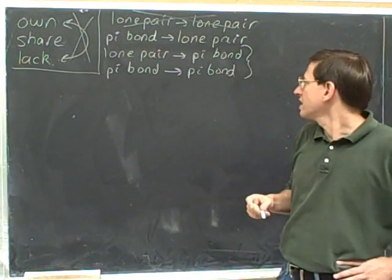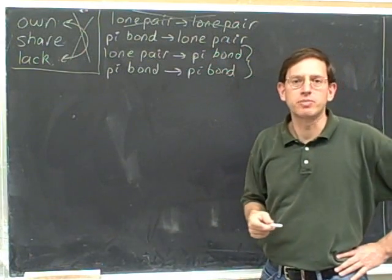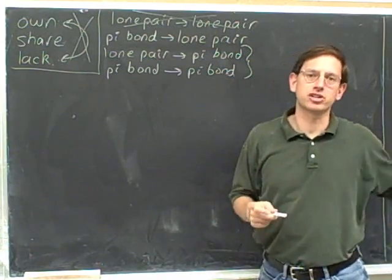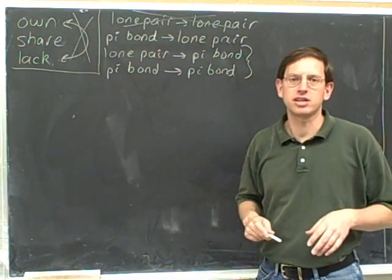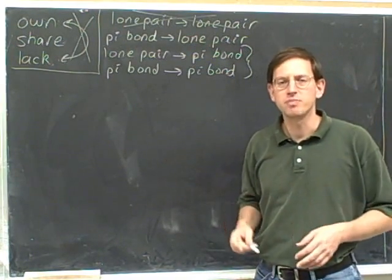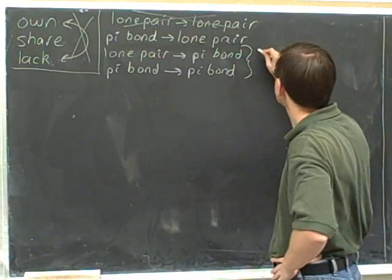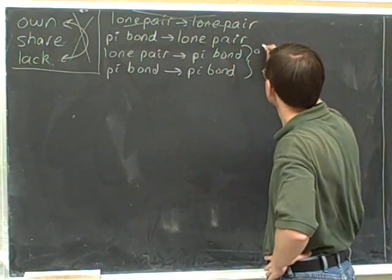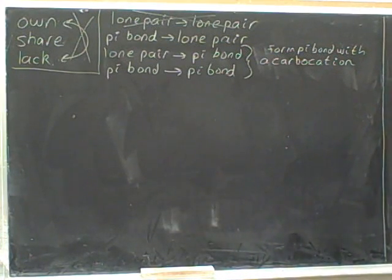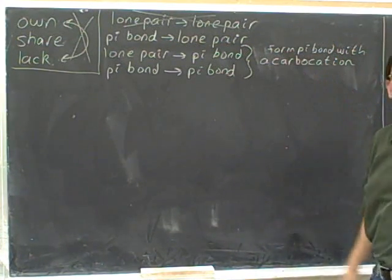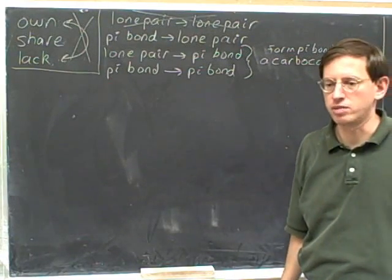One good way is to form the pi bond with a carbocation, because the carbocation had too few electrons. So when it gains the pi bond, we don't need to worry that it's going to have more than an octet — the carbocation already had too few electrons. So it's okay to form a pi bond with a carbocation.